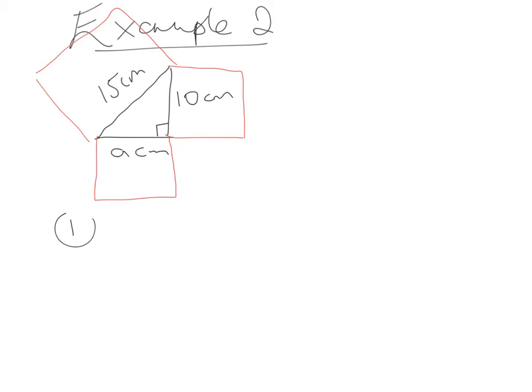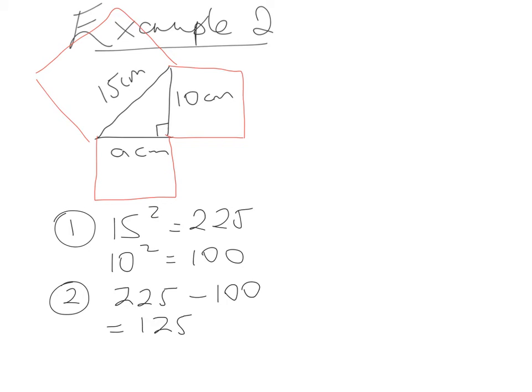Step one is going to be the exact same. We're going to do 15 squared which gives us 225, and we're going to do 10 squared which gives us 100. Step two is the crucial one because it's a shorter side missing, so s for shorter side, s for subtract. We're going to subtract the square of the hypotenuse away from the shorter side, and that's going to leave us with 125 centimeters squared.